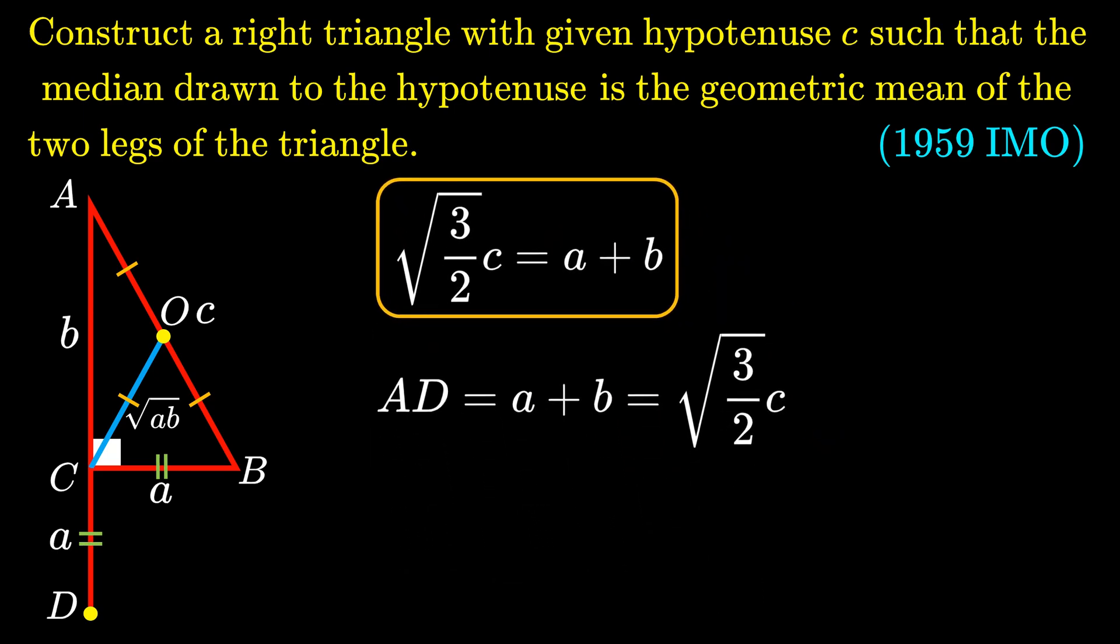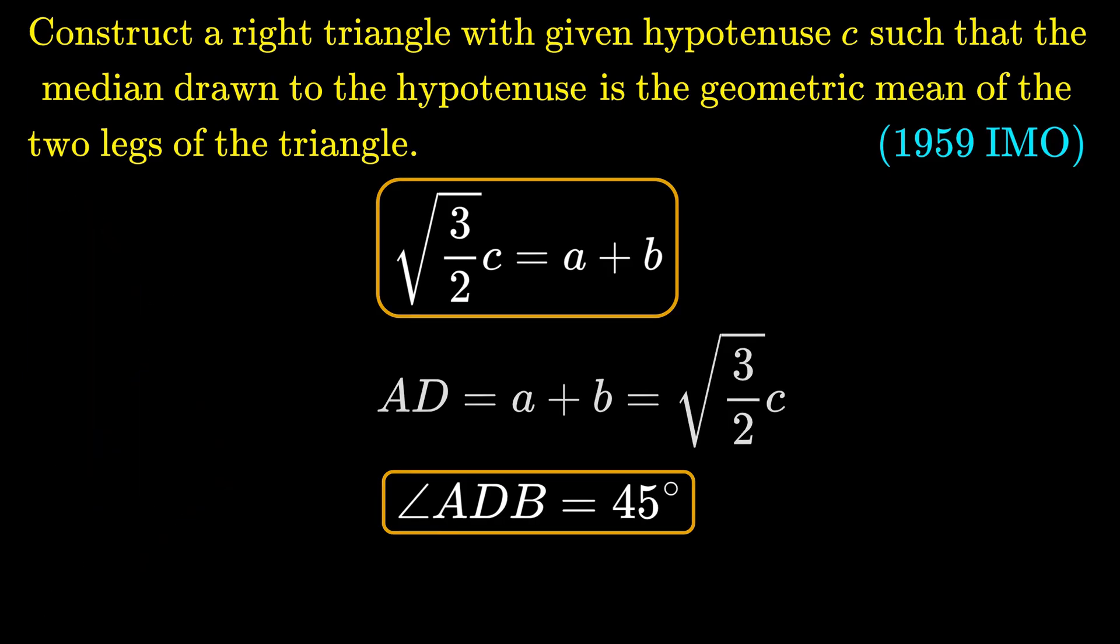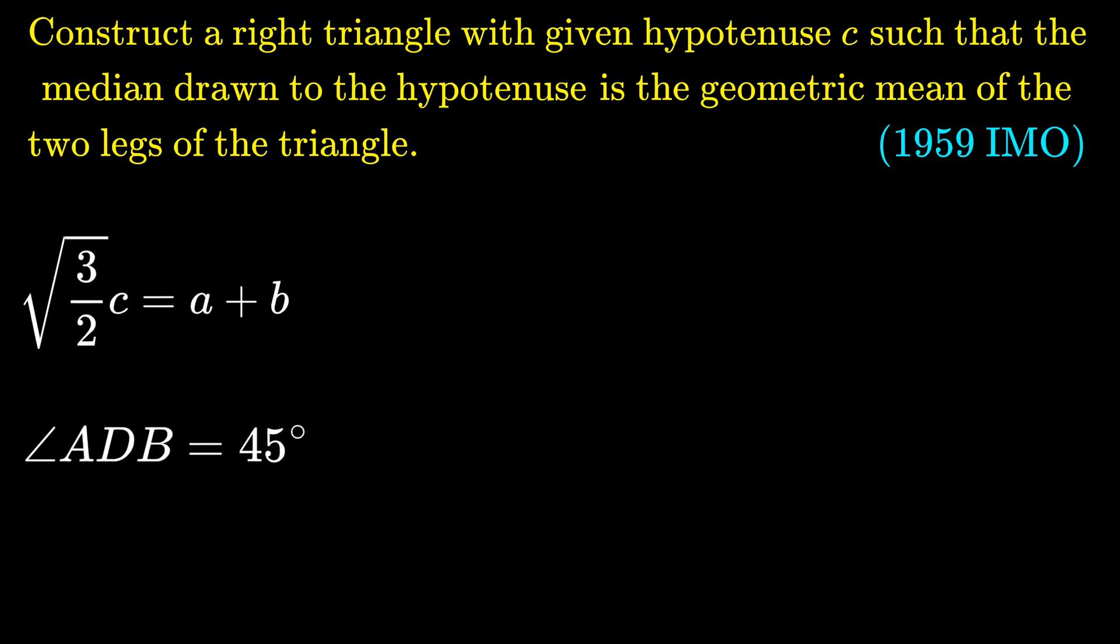Most importantly, we know that angle ADB is 45 degrees, since triangle CDB is an isosceles right-angled triangle. With the information that the sum of lengths A and B is √(3/2) · C and angle ADB is 45 degrees, we are ready to construct triangle ABC.